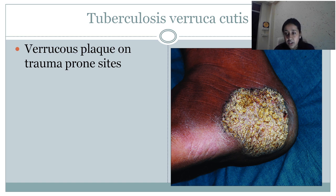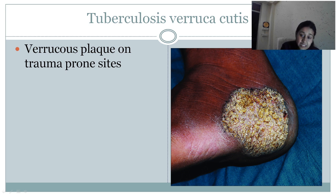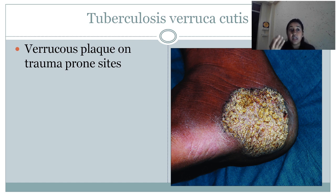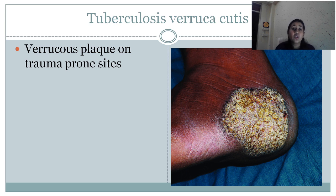Coming to tuberculosis verrucosa cutis — this is also an example of skin tuberculosis. The characteristic clinical appearance is the presence of a verrucous lesion. The surface is rough. Whenever a patient comes with this lesion, another possibility to keep in mind is subcutaneous fungal infection — chromoblastomycosis, which also presents with this kind of verrucous plaque. You must keep chromoblastomycosis as a differential along with tuberculosis verrucosa cutis, and further do biopsy, Mantoux test, or KOH examination.